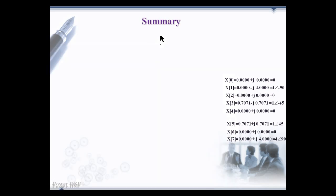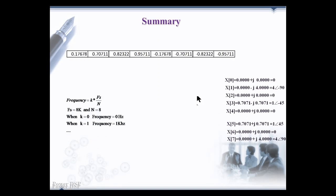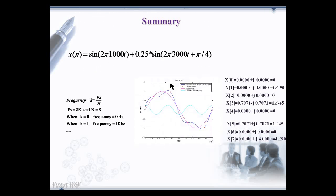These are the outputs we got for the input samples after feeding it to the Fourier transform. These samples are taken at the sampling frequency of 8 kHz from the composite signal x of n which contains 1 kHz and 3 kHz frequency components. The individual 1 kHz and 3 kHz along with the addition of these two are given in this diagram.